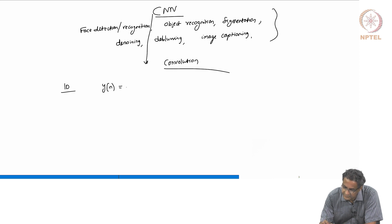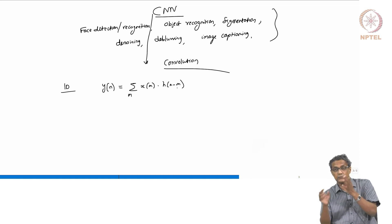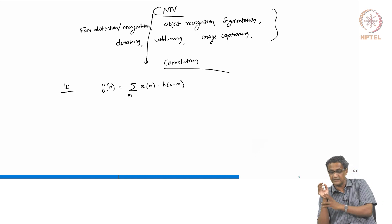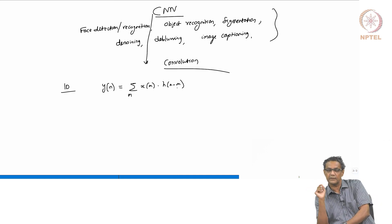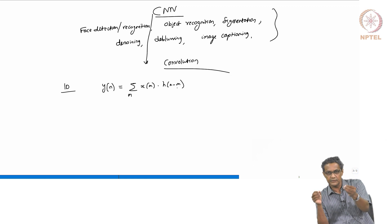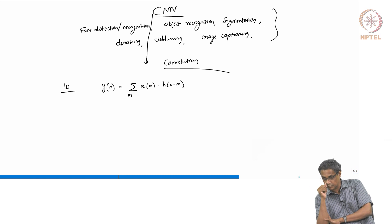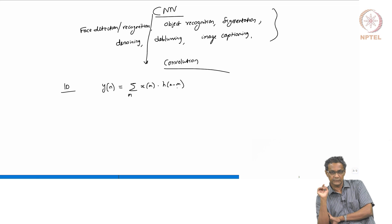For example, I have an impulse response H and an input X. The convolution sum is sum over M of X(M) · H(N−M). When you do this, H is some kind of impulse response with finite support. You have an input X(N) and you want to find out: if this input is applied to this impulse response, what will be the output? That can be expressed in terms of a convolution, provided the system is linear as well as time-invariant — it is an if and only if.